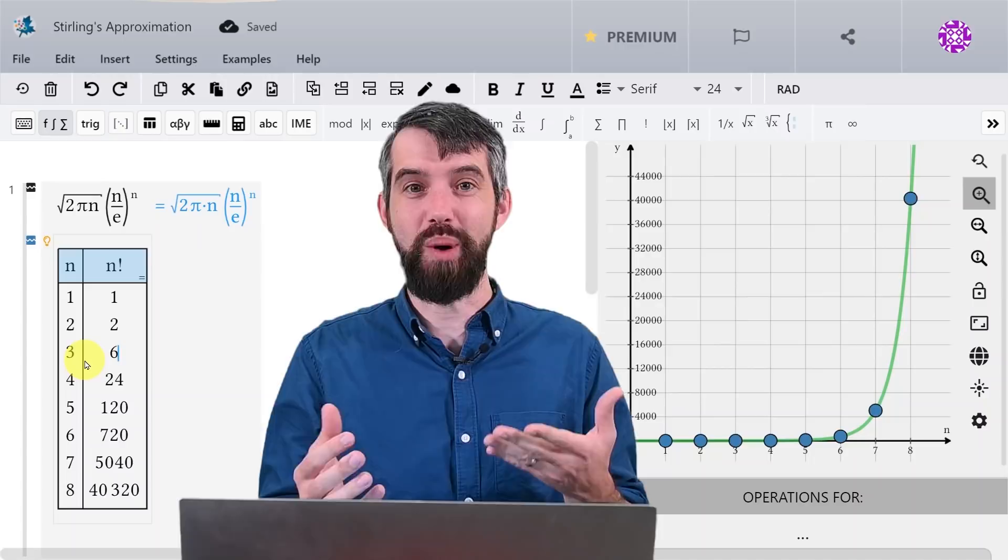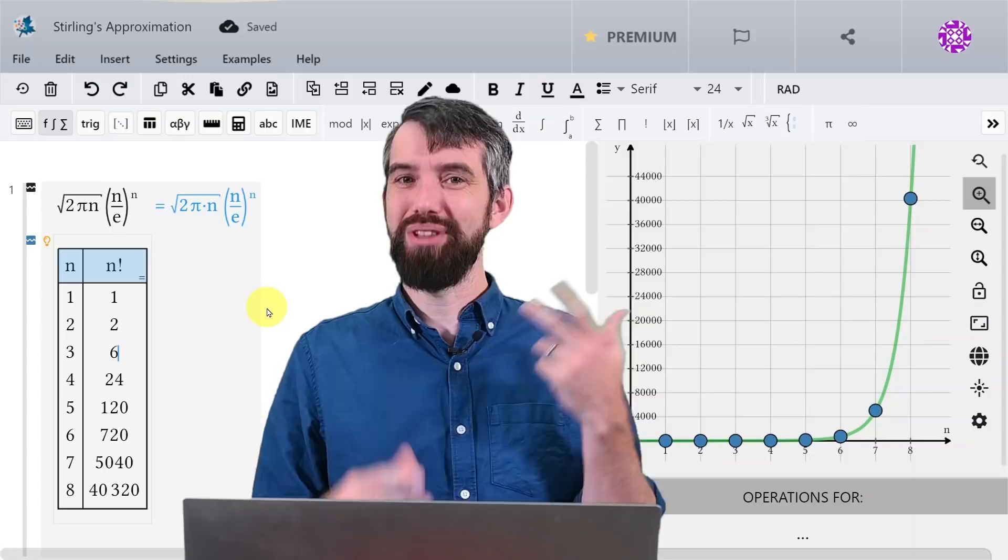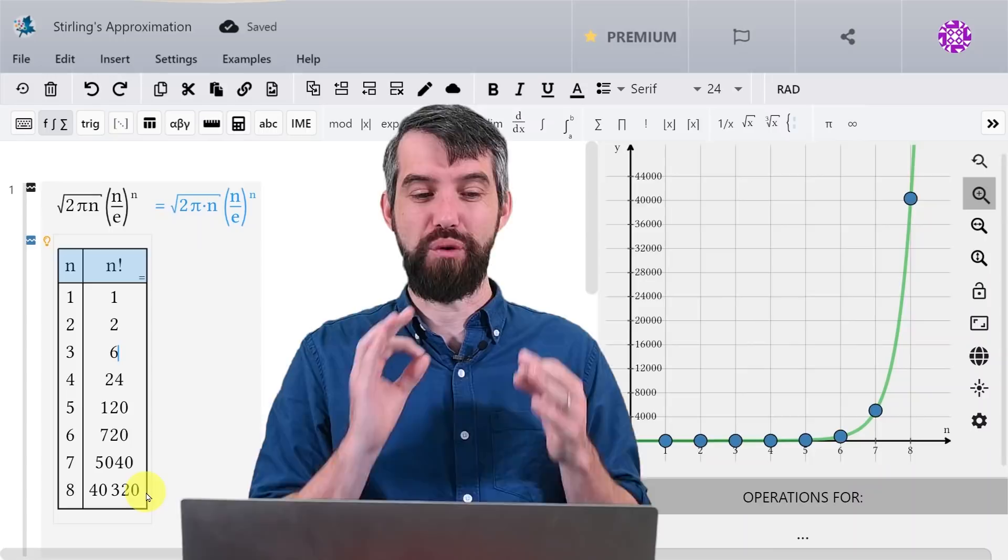And I mean, look how great this is. For a only slightly large value like 8, the numbers are getting really large. For example, factorial is already over 40,000 here, but it looks visually pretty good.